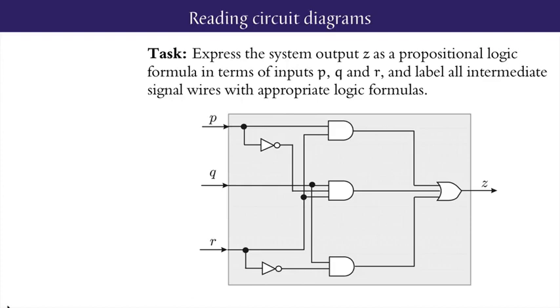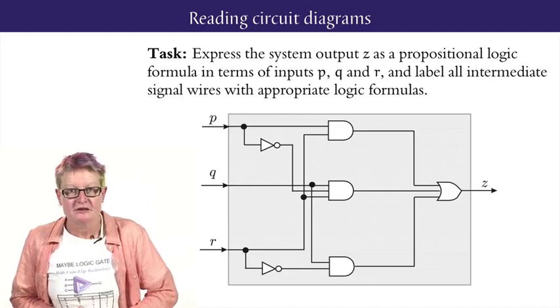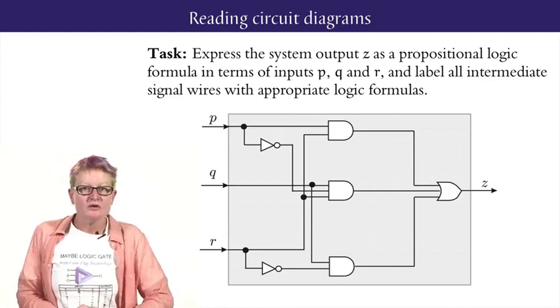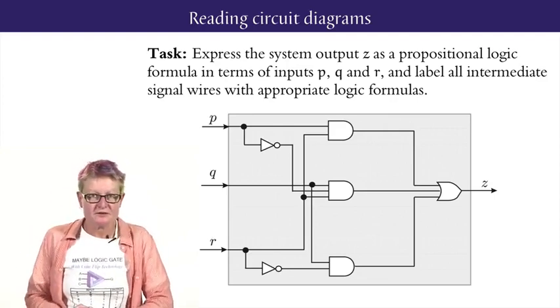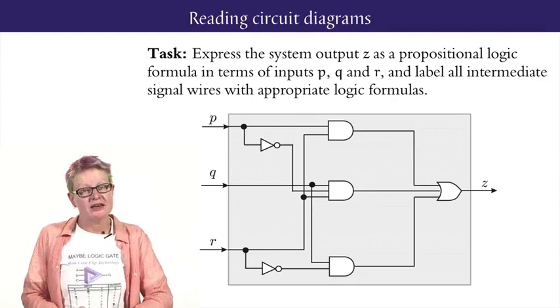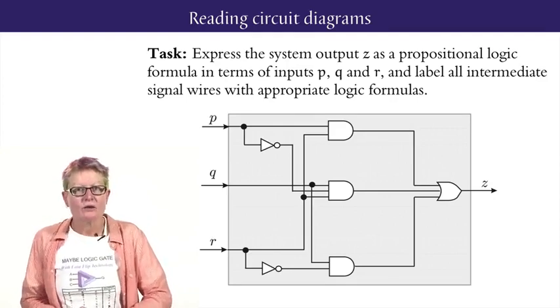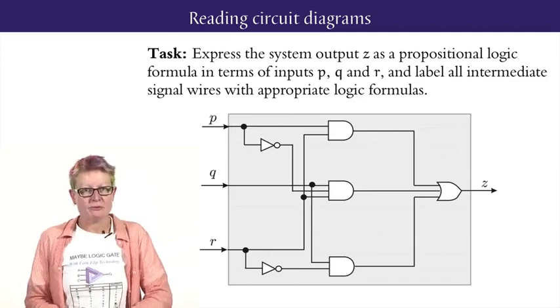For this lesson, we are interested in developing the skill of reading circuit diagrams for combinational systems, in order to extract a logic formula for each output, expressing it in terms of the inputs. A systematic way of doing this is by labeling each of the intermediate signal wires with appropriate logic formulas, in order to capture the build-up to the output.